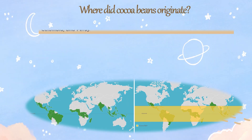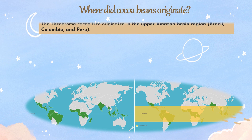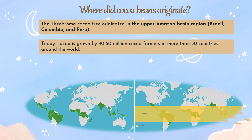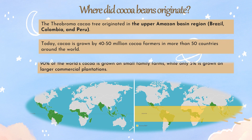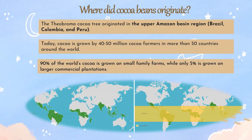The Theobroma cacao tree originated in the upper Amazon basin region — Brazil, Colombia, and Peru. Today, cacao is grown by 40 to 50 million cocoa farmers in more than 50 countries around the world. Ninety percent of the world's cocoa is grown on small family farms, while only five percent is grown on larger commercial plantations.